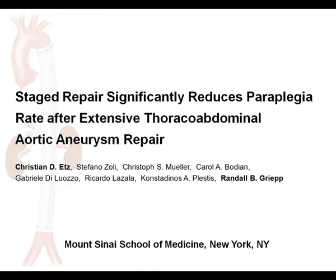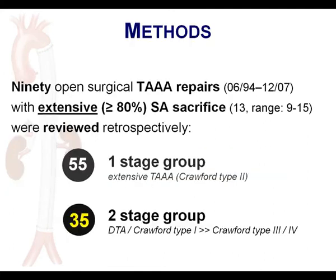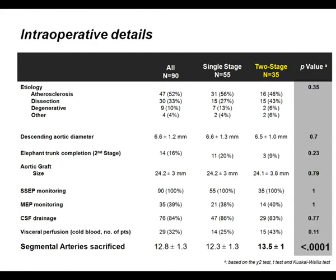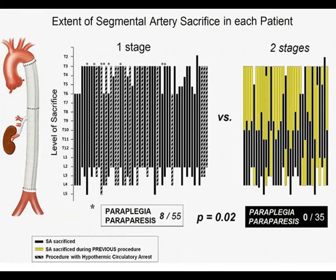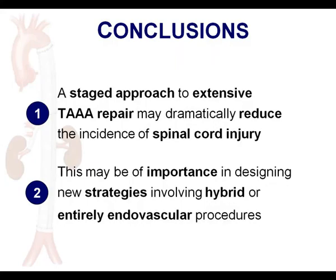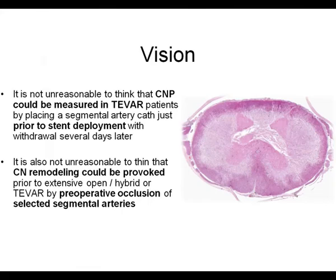It is not unreasonable to think that collateral network pressure could be measured even during TEVAR in the future, placing a segmental artery catheter just prior to stent deployment. It is also not unreasonable to think that one could provoke collateral network remodeling by preoperative occlusion of selected segmental arteries, possibly by coiling. Thank you very much for your attention.